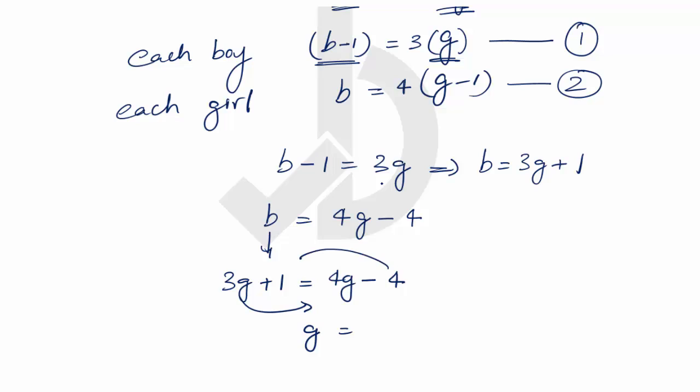Now when G is 5, we substitute this value in the equation. B equals 3 times 5 plus 1, which equals 16.